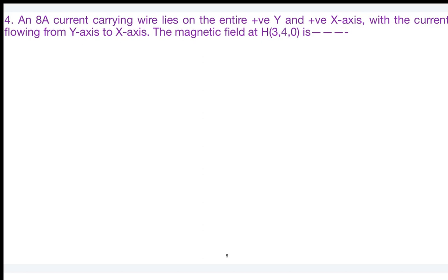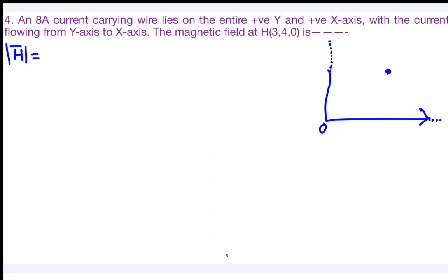For the first part — the semi-infinite wire on the y-axis — this can be treated as a finite line current using the formula H = I/(4πρ) × (sin α₂ − sin α₁). The observer is at (3, 4, 0). For the first element (along y-axis), the radial distance ρ = 3.